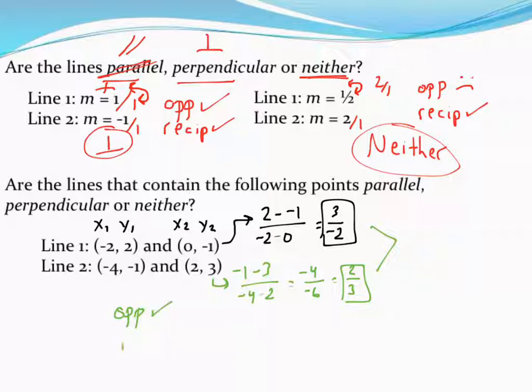But the other thing I have to check for is are they reciprocals? Meaning, can I take one fraction and flip it and get the other one? Well, if I flip 3 over 2 around, I get 2 over 3, which, yes, is my other fraction. So they are reciprocals as well. Meaning, these two lines are perpendicular to each other.